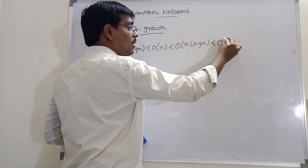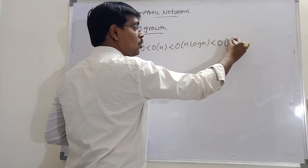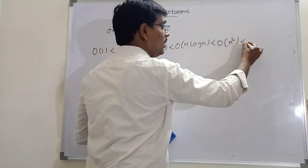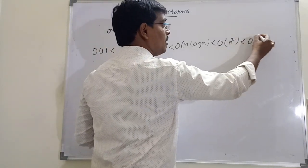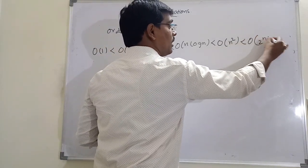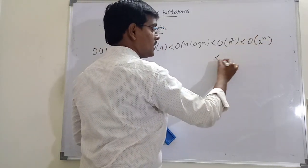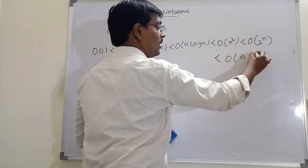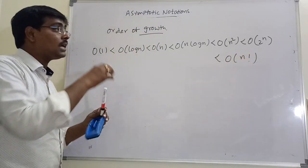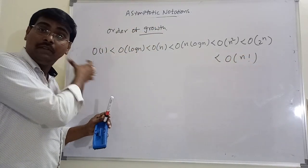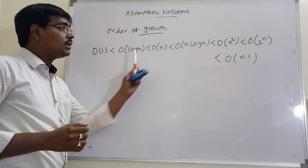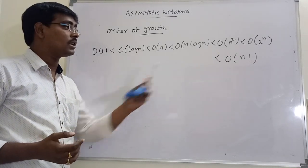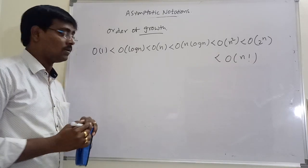Next is Big O(n²) = 64, then Big O(2^n), then Big O(n!). This is the order in which we calculate and represent time complexities.